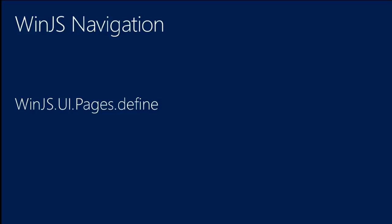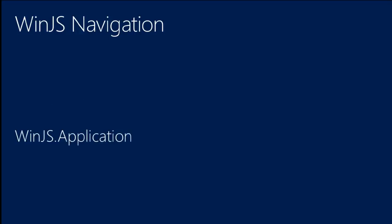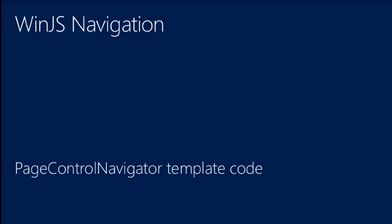For participating in navigation in WinJS, you have a WinJS UI Pages defined method with various options, and a ready handler that's like OnNavigatedTo in the XAML world where you can initialize your page. At the application level there's an application namespace for initial navigation, similar to the App class in XAML. WinJS also gives a little more templating around this — there's a function called the Page Control Navigator that's pre-generated by Visual Studio into WinJS projects if you pick the right project type.